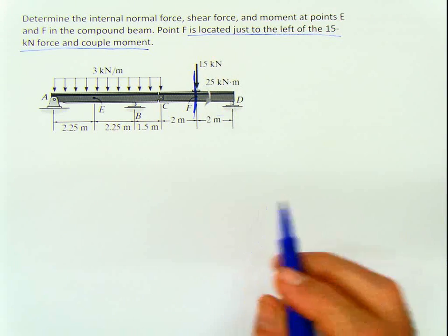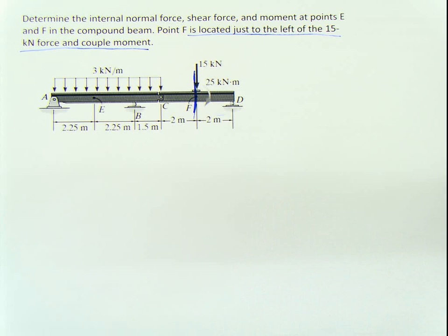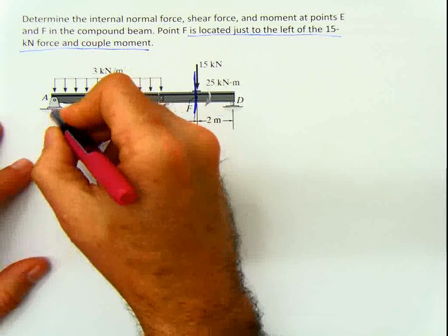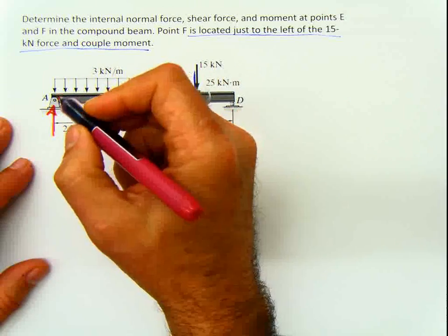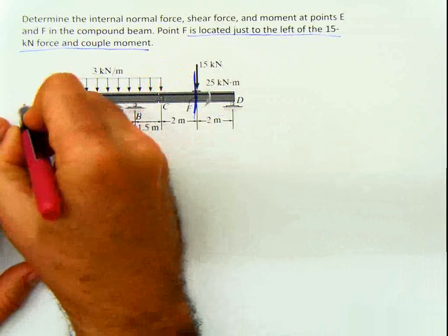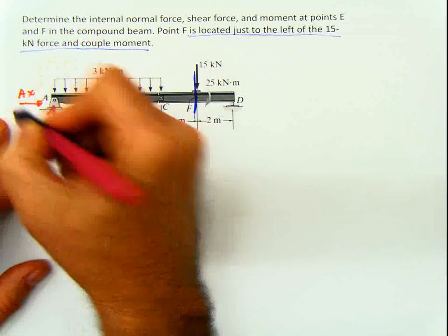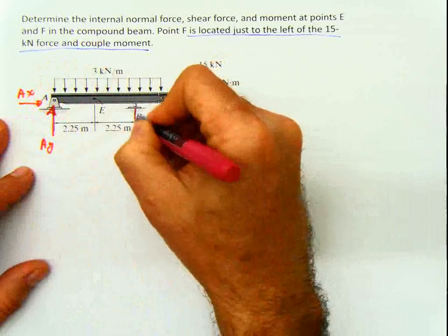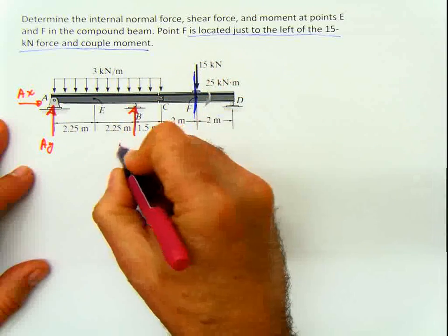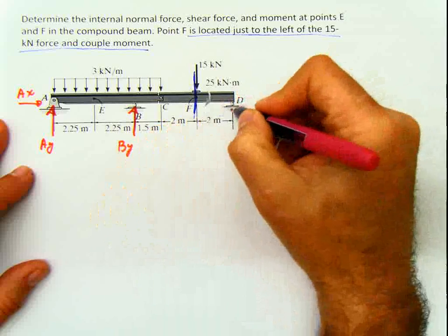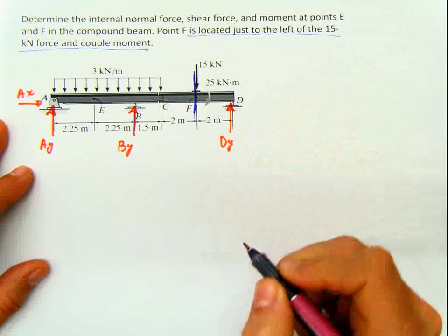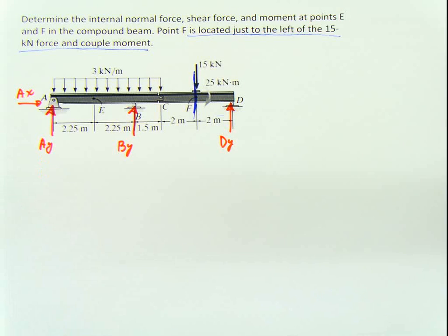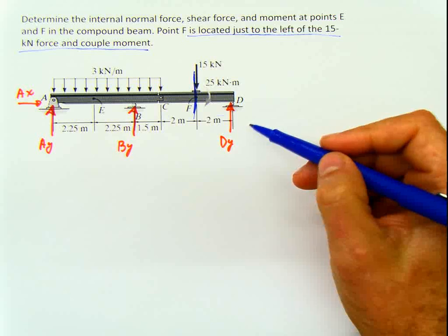There's another issue associated with this example. This is a pin, so we have one reaction in x and one in y. This is a roller, giving us another vertical reaction By. And this is another roller, giving us a vertical reaction Dy. When we start working with this problem, we're going to see that we have four unknowns and three equations.